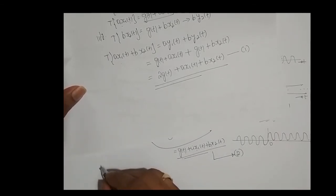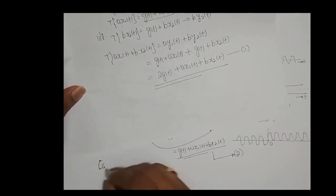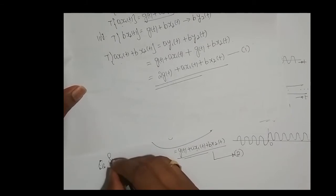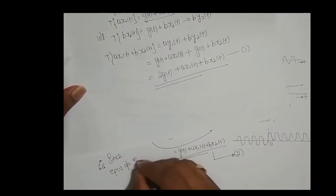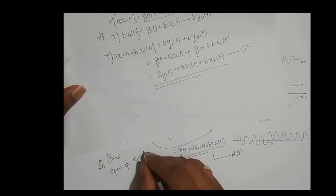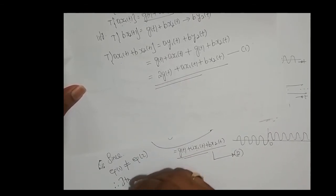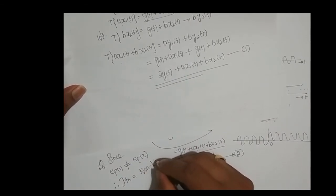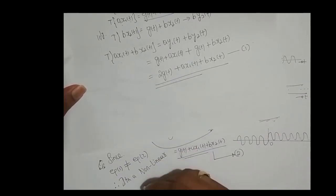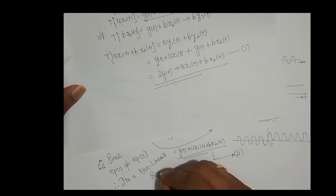So what is our conclusion? Since equation 1 — which is a times y1 of t plus b times y2 of t — is not equal to equation 2 — which is g of t plus a times x1 of t plus b times x2 of t — therefore it is a non-linear system.